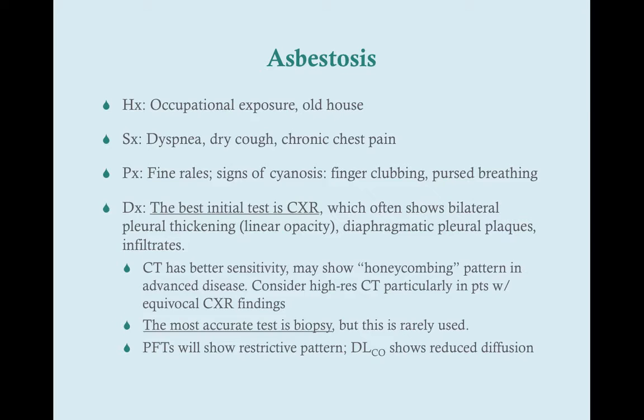Patients who live in an old house may also have been exposed, though most people have had asbestos removed, and none of the newer houses built since the 1970s have asbestos. Symptoms include dyspnea, dry cough, and chronic chest pain, probably due to constant coughing and difficulty breathing. On physical exam, you can hear fine rales particularly in the lower and posterior lung areas, and see signs of cyanosis such as finger clubbing and pursed-lip breathing.